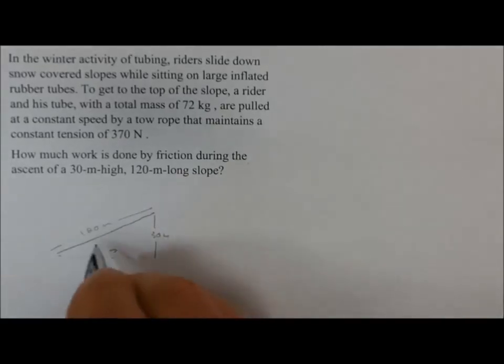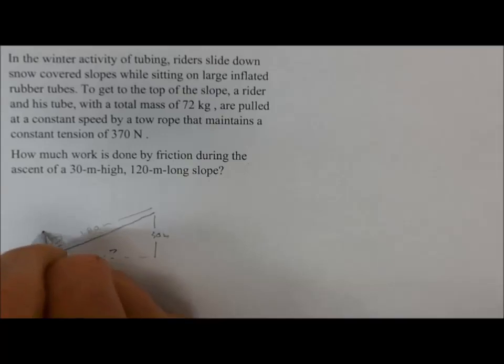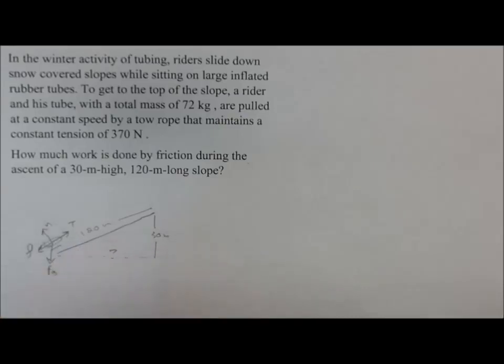Now the tuber, the person riding that tube, they start down here, they've got gravity down, they've got a normal force up, they've got the tension from the tow rope, and they've got some friction acting that way. So that gives me some ideas of the forces that are acting here because we're being asked about friction. Friction is a force. It's going to do some work in this case. We need to figure out how much work was done in pulling that up.